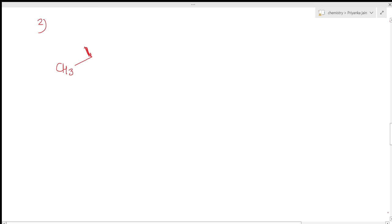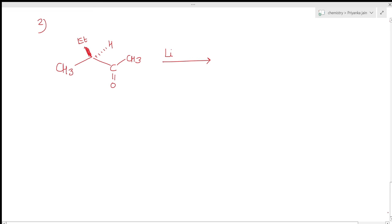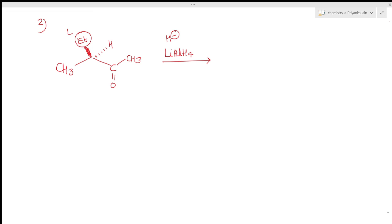Second example: treating CH3-C=O with ethyl, methyl, and H substituents using LiAlH4, where the nucleophile is H⁻. Assign groups: ethyl is large (L), methyl is medium (M), and hydrogen is small (S). The large group (ethyl) is above the plane and the carbonyl group is on the other side, so they are anti to each other.